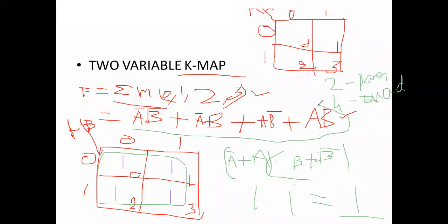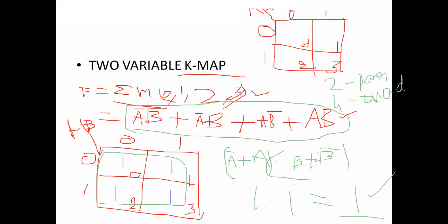So by using K-map we simplify this expression and we are getting the final answer is 1. We were taking min terms only. Now suppose the expression is given in the form of max terms — how to simplify that? In this class we learn that. So I will erase this.